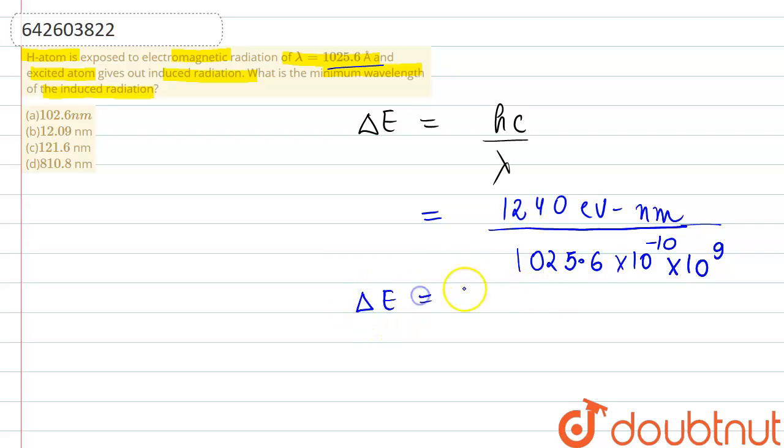From here the value of delta E comes out to be 12.09 electron volt. But what is asked in the question, minimum wavelength of the induced radiation.